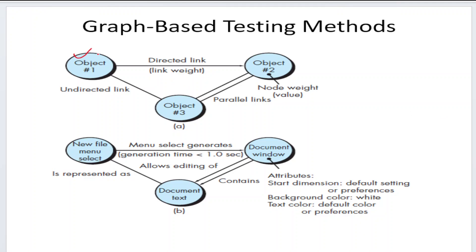This is the general diagram of the graph-based testing method. From an examination point of view, you can draw this diagram. There are three objects here: Object 1, Object 2, and Object 3. I may place directed links, parallel links, or depending on the scenario, undirected links.